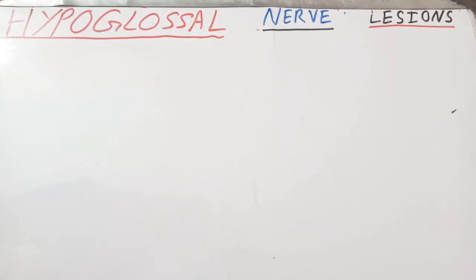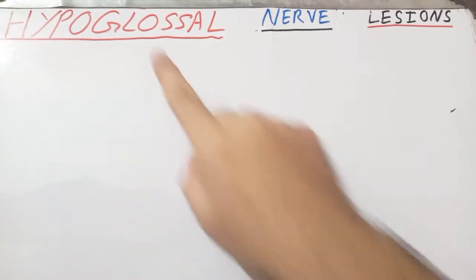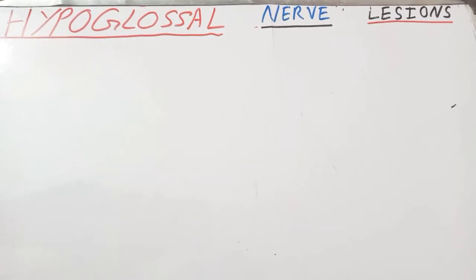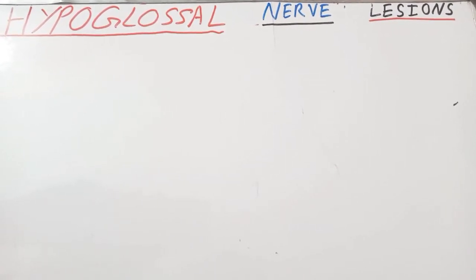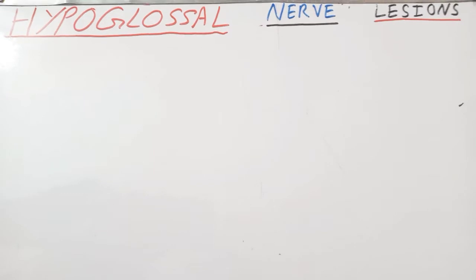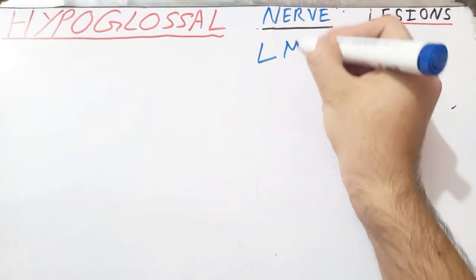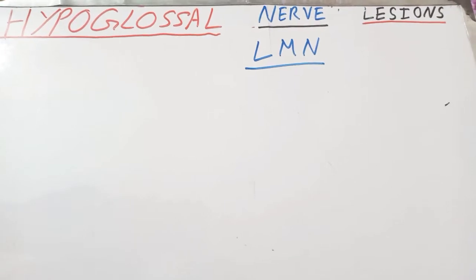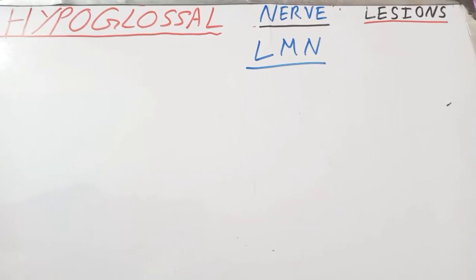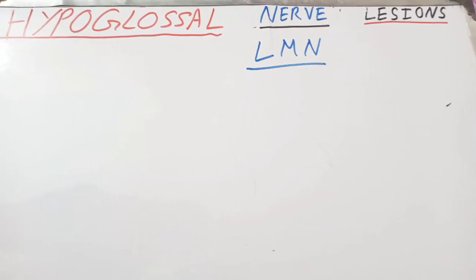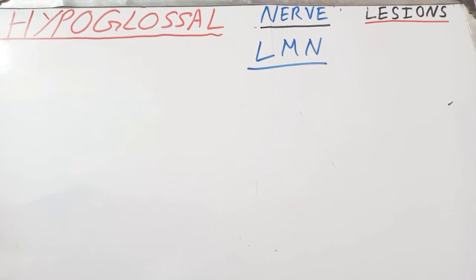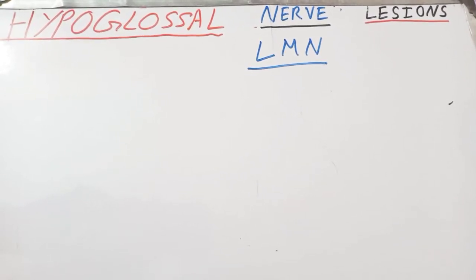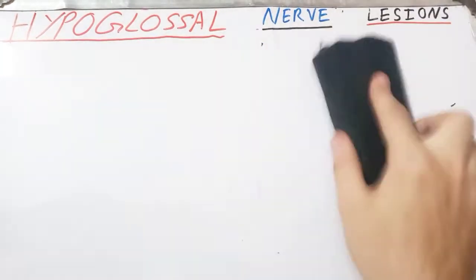Hello everyone, today we'll be talking about the hypoglossal nerve lesions. We will talk about both the upper motor neuron lesions and the lower motor neuron lesions of the hypoglossal nerve. Let's first talk about the lower motor neuron lesions. The hypoglossal nerve is the 12th cranial nerve and it emerges through the hypoglossal canal. The lower motor neuron lesion can occur anywhere along its path.